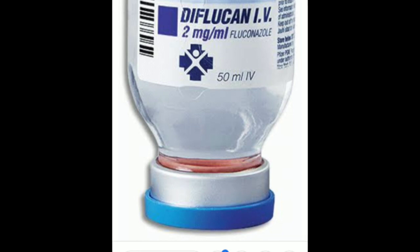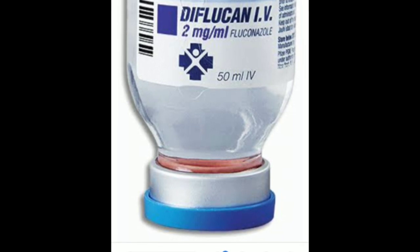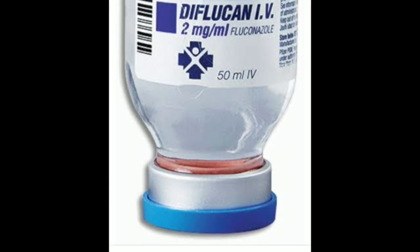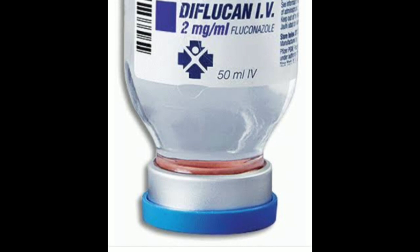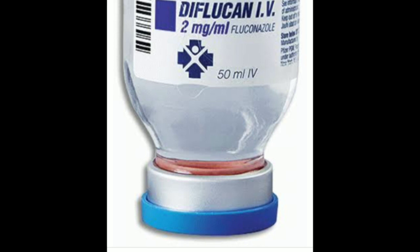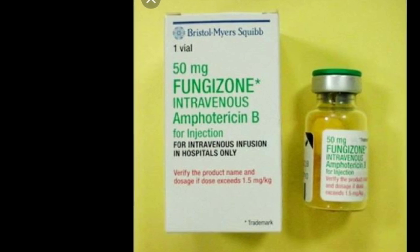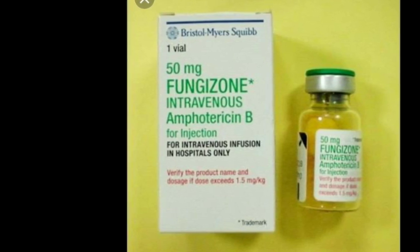Now amphotericin B — also an antifungal and a very potent one. It comes in 50 mg vials. Put 10 ml distilled water and make it 5 mg per ml, then draw 3 ml (15 mg) solution and add it to 7 ml artificial tears, and a topical 0.15% or 1.5 mg per ml solution is ready for topical use.